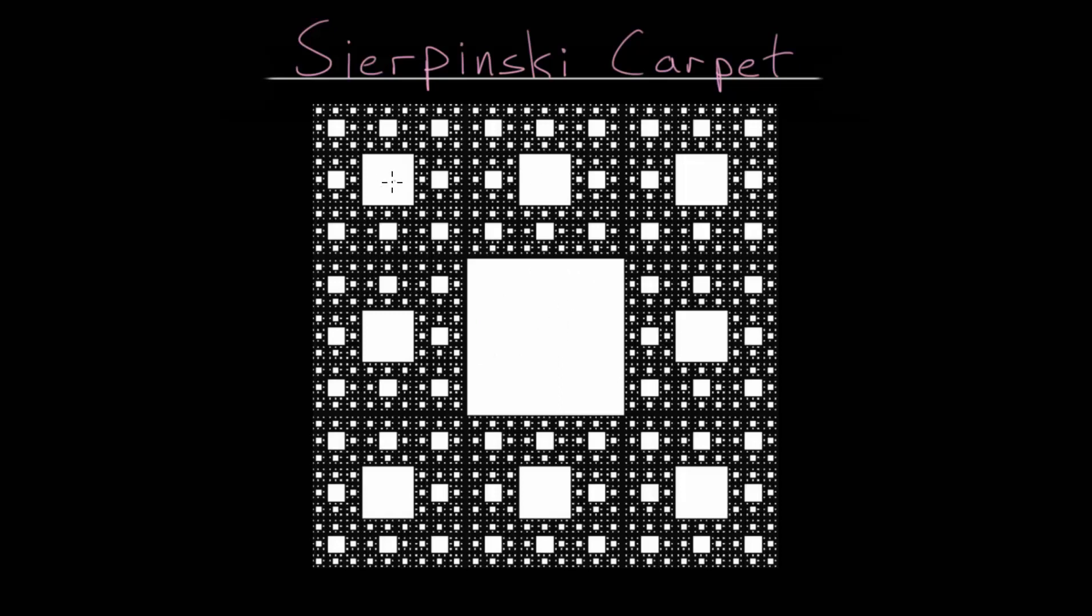The second step is to take each of the remaining squares and repeat that process: split it into nine equally sized squares, and then remove the middle one. And that process is carried out infinitely many times. And this picture is the result of that process carried out to infinity.